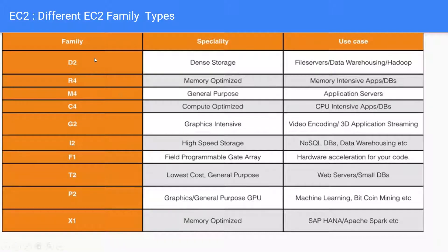For example, we've got a T2 family and the T2 family has got multiple members like nano, micro, small, large. As the name suggests, they differ in size, their capacity, their CPU power, their RAM, their network performance, etc.